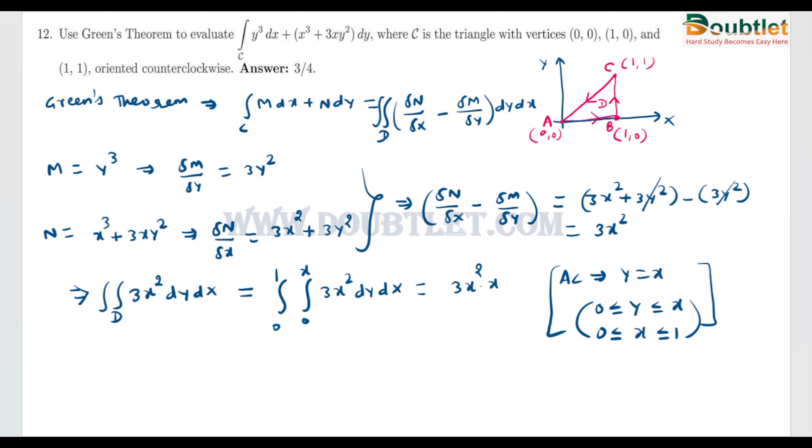Because dy integration is y, and if we put the limit from 0 to x it will be x. It will directly multiply to 3x² and we have to integrate now with respect to x. It will basically be 3x³. If we find the integral of 3x³, it will be 3x⁴/4 and the integration limit will be 0 to 1.